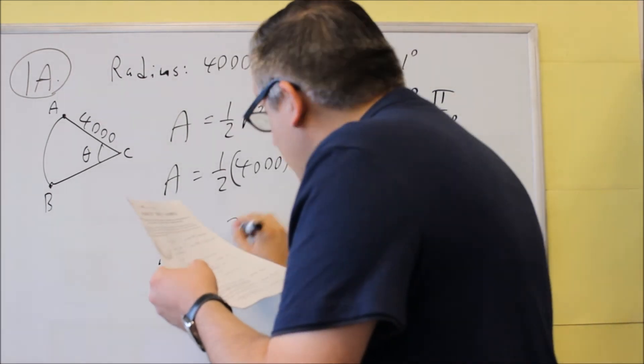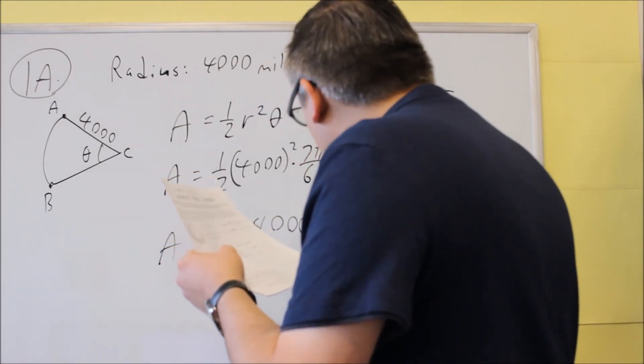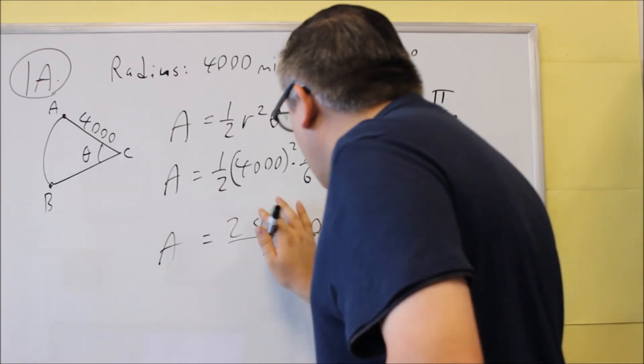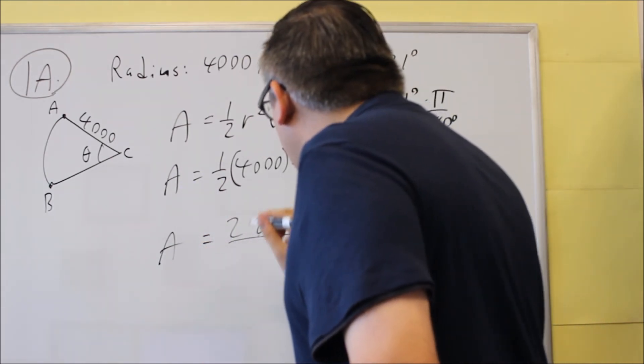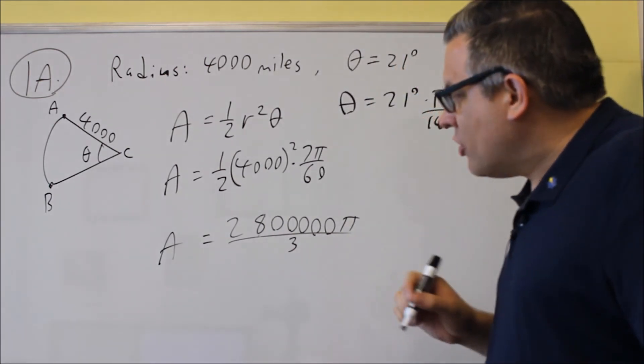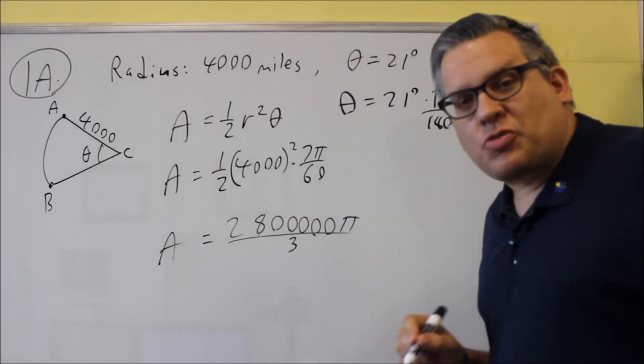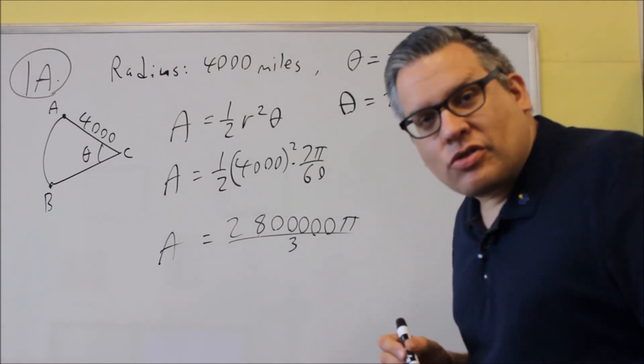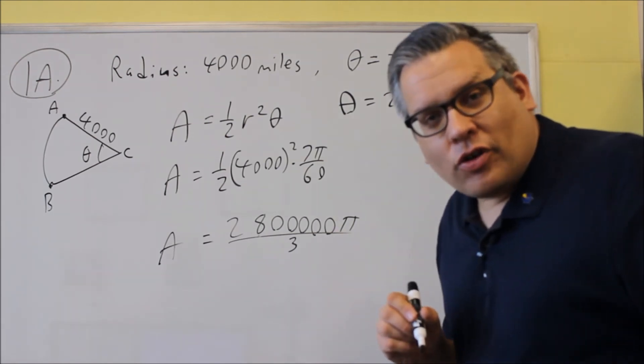So I'll just give you what the final answer is. There's 28 with 5 zeros pi, and that's going to be divided by 3. Now for each of these problems, you could change all this into decimals, and I do have that on the key.